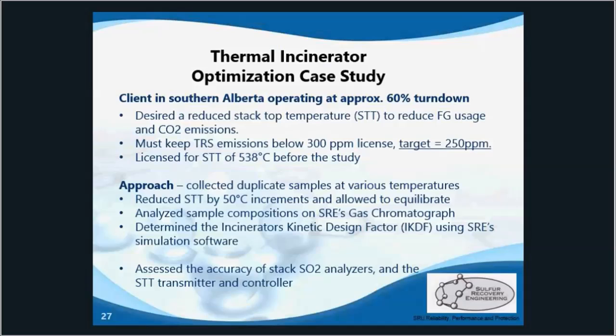So now we'll go over a case study for one of our recent incinerator optimization projects. This was a client in southern Alberta. They brought us in to optimize their incinerator at their new 60% turndown operation — a pretty big turndown. They were licensed for a total reduced sulfur emission limit of 300 ppm, so we chose a target of 250 ppm for a safe margin.